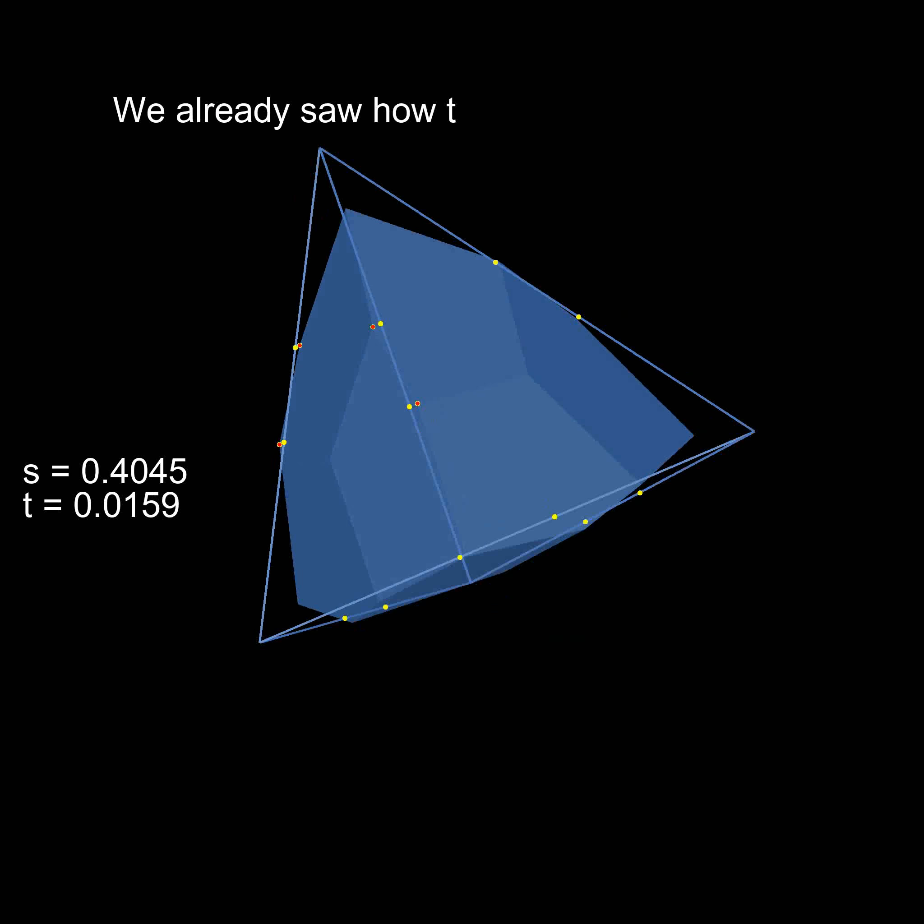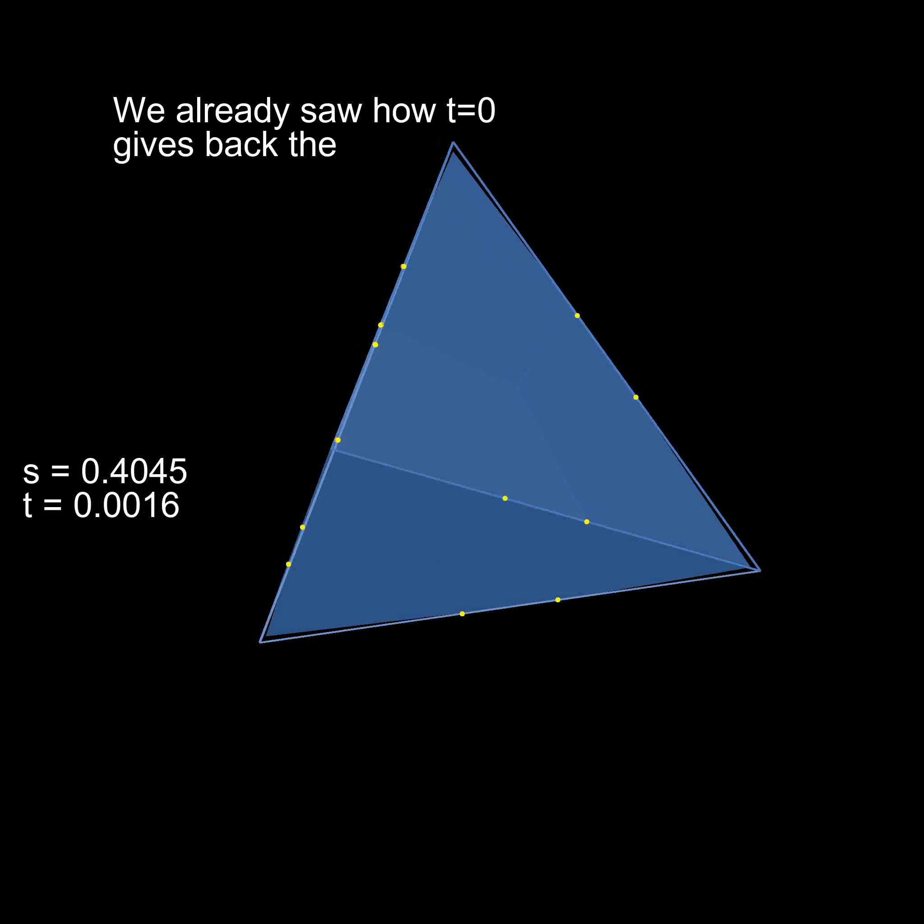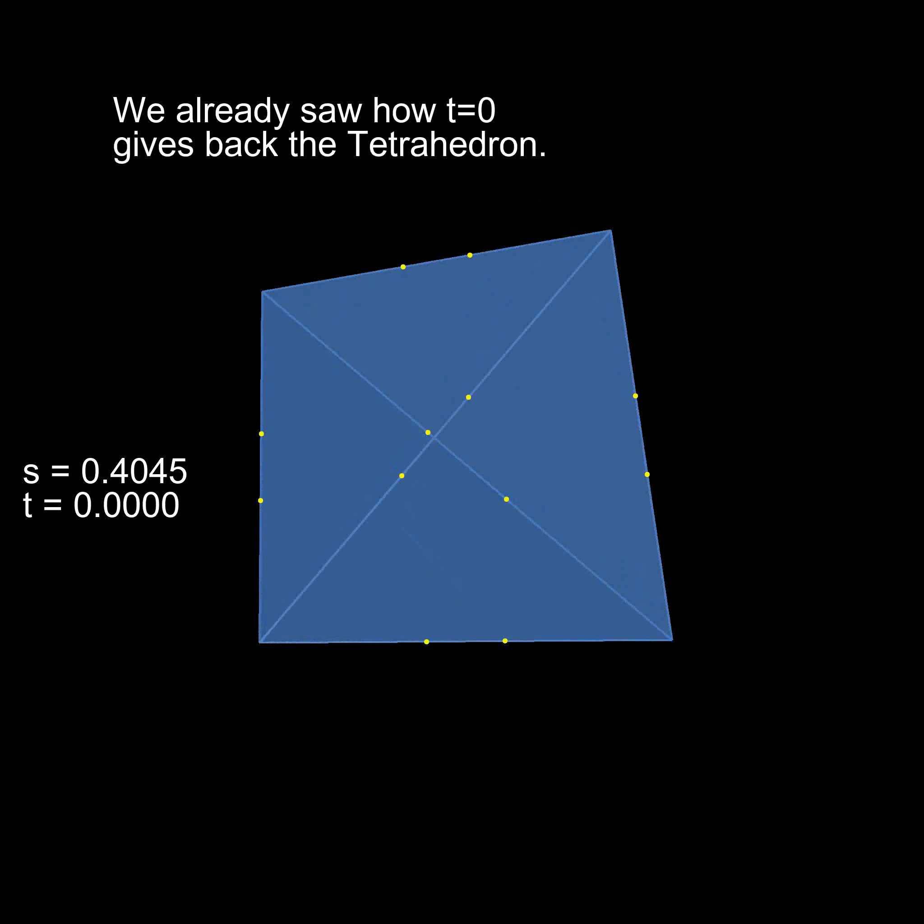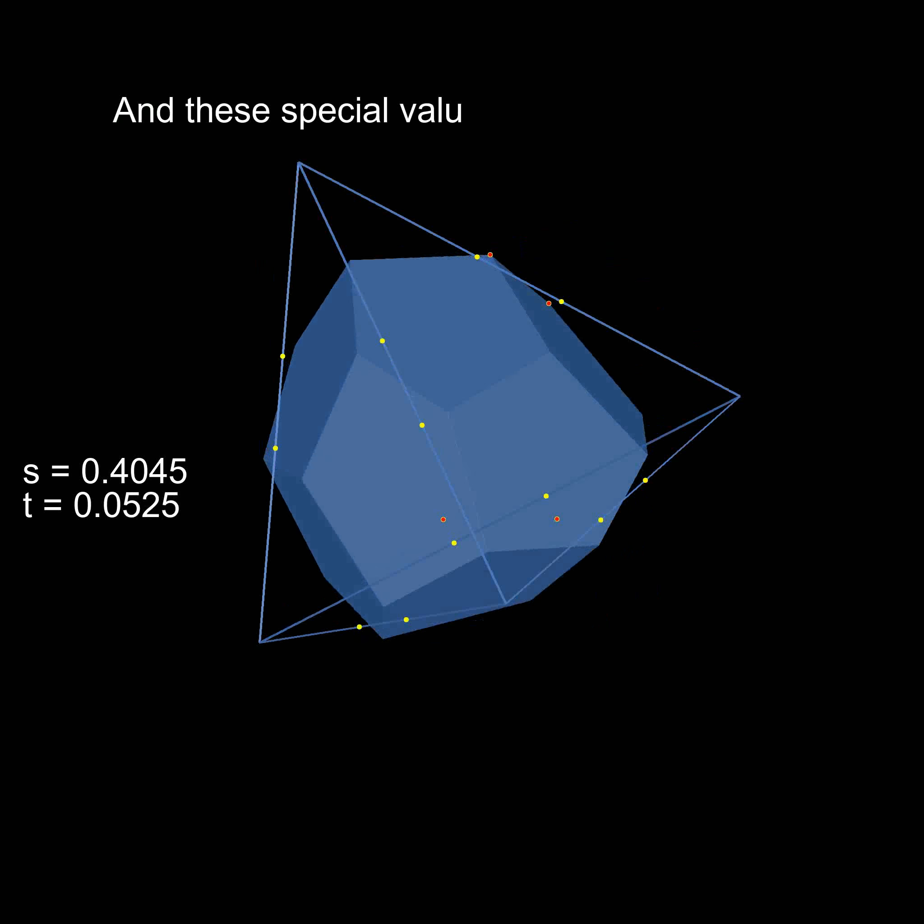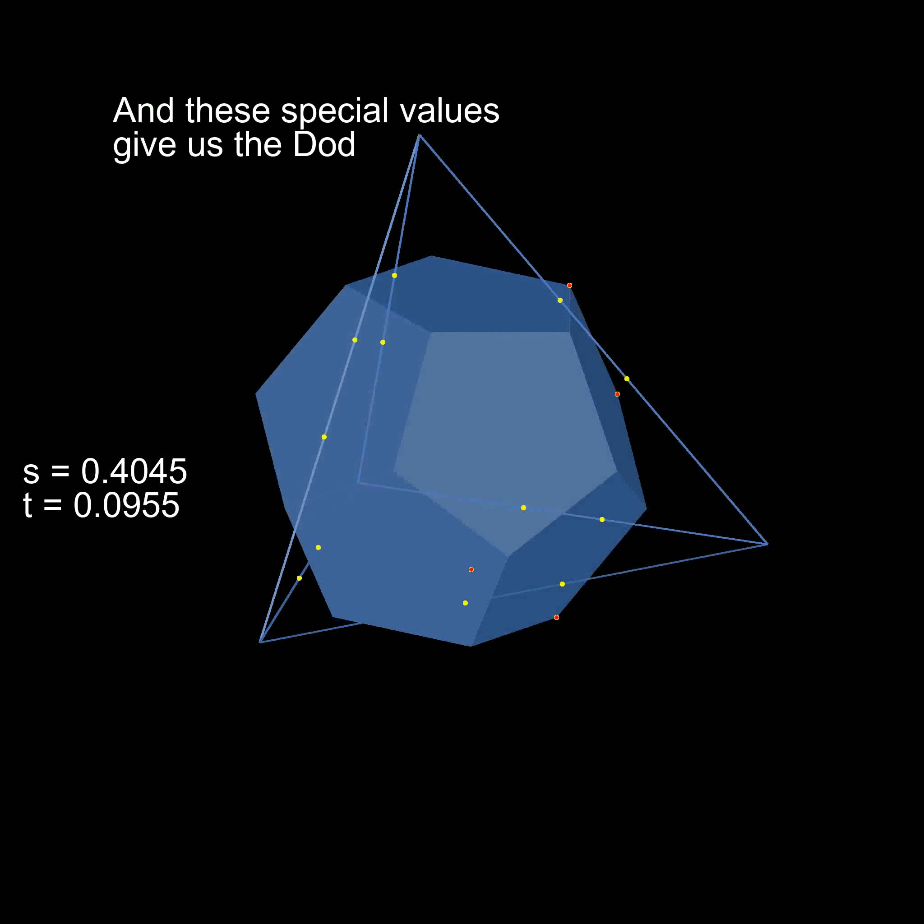Now we already saw that when t is zero, then we never move the yellow points and we stick to the tetrahedron. And for these particular values of s and t, we end up with the dodecahedron.